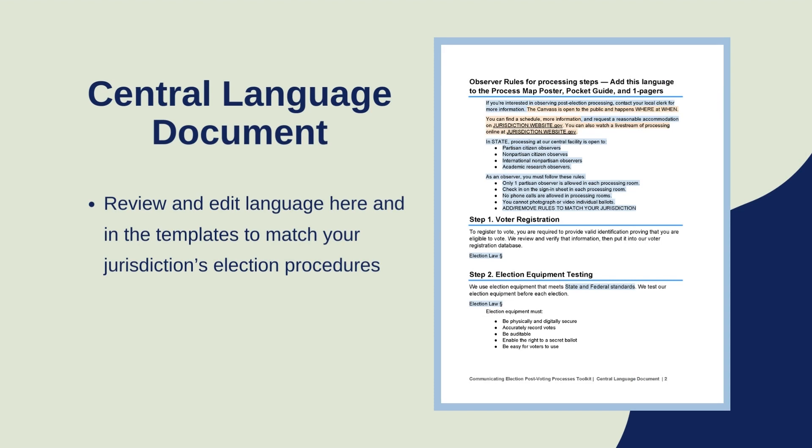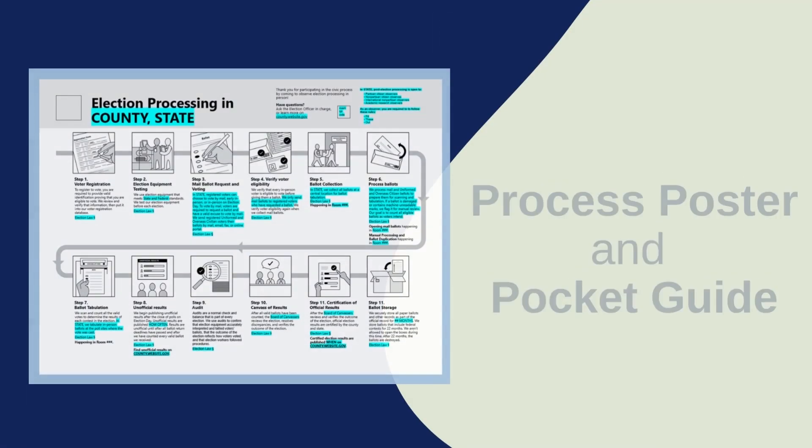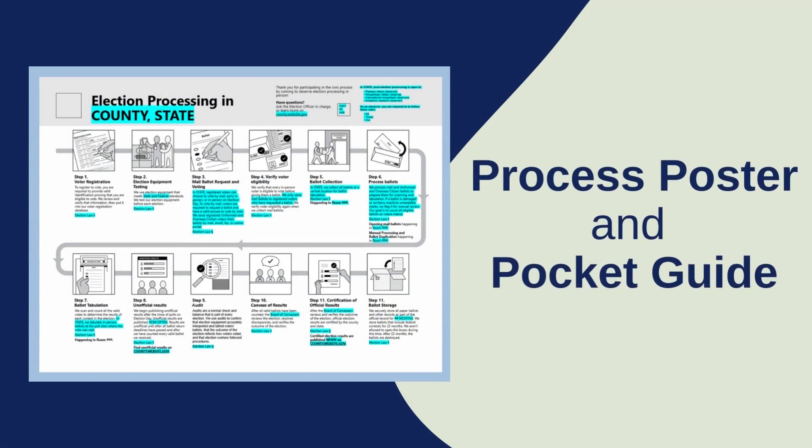This text can also be used on websites and social media. For printed materials, the process map poster can be printed and posted in the office. The pocket guides can be printed in black and white on a regular sheet of paper and kept in the office year-round or handed out at community events.